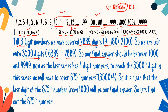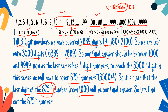Our answer will lie between 1000 and 9999. As the last series has 4-digit numbers, we have to reach the 3500th digit in this series. So, 3500 divided by 4 gives us 875. It is very clear that we need the last digit of the 875th number in the series from 1000 to 9999. From this series, we calculate the 875th number, then we will find out the last digit of that 875th number. This will be our answer.